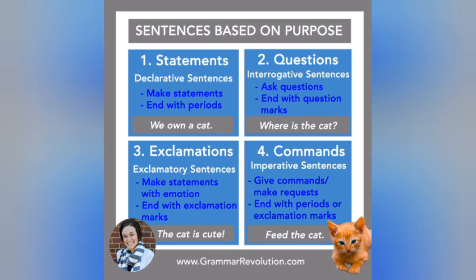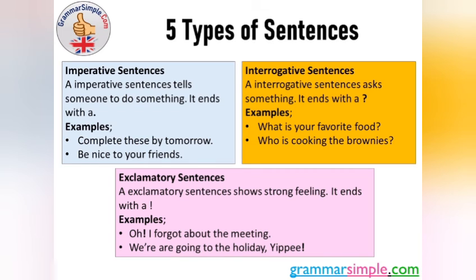An imperative sentence gives a command or makes a request, and ends with a period or exclamation mark. In an imperative sentence, the subject is understood. For example: 'Feed the cat' is a request. 'Complete these by tomorrow,' 'Be nice to your friend,' 'Close the window,' 'Open the door' — these are all imperative sentences giving orders or commands.